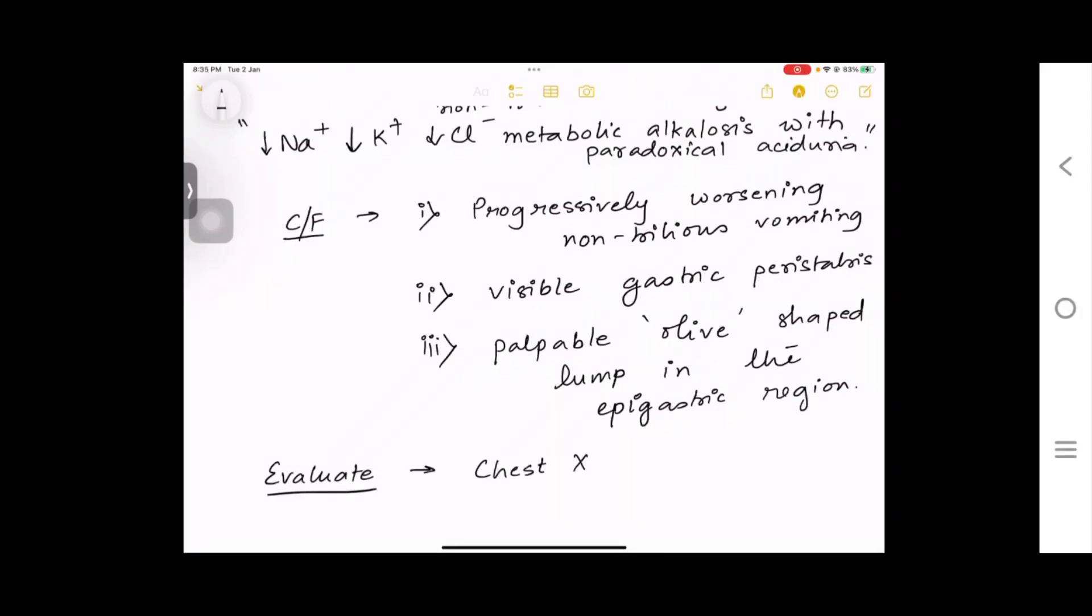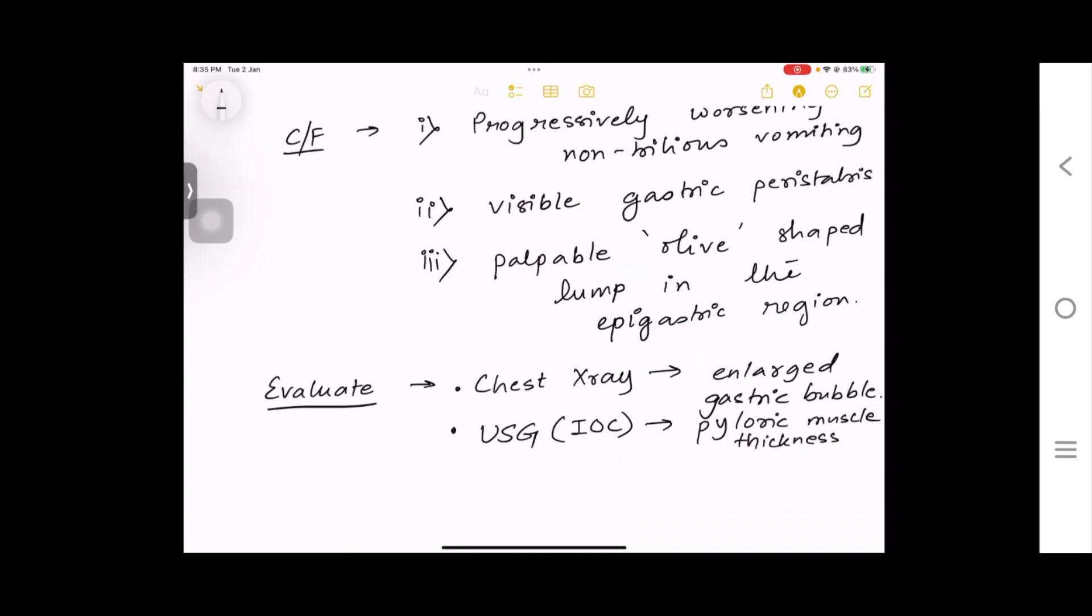Now come to the clinical features of this disease. First, there will be progressively worsening non-bilious vomiting. Two, there will be visible gastric peristalsis moving from left to right. And third, the mothers will complain that there is a palpable olive-shaped lump in the epigastric region.